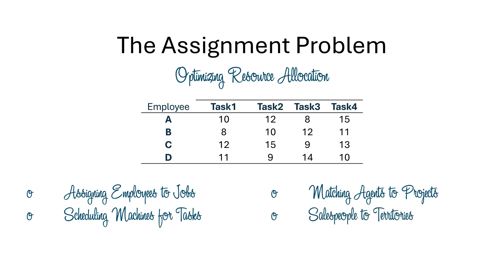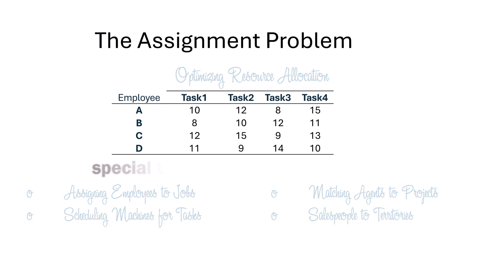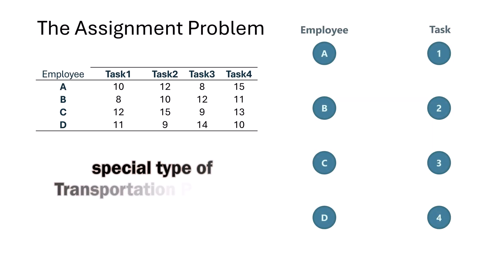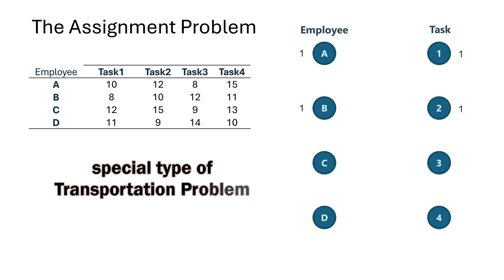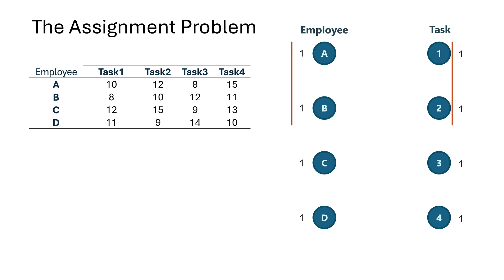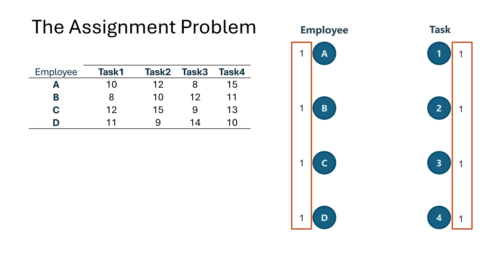Importantly, the assignment problem is a special type of transportation problem in which both supply and demand at each point are exactly one. This means each resource, like a worker, can only be assigned to one task, and each task can only be performed by one resource.